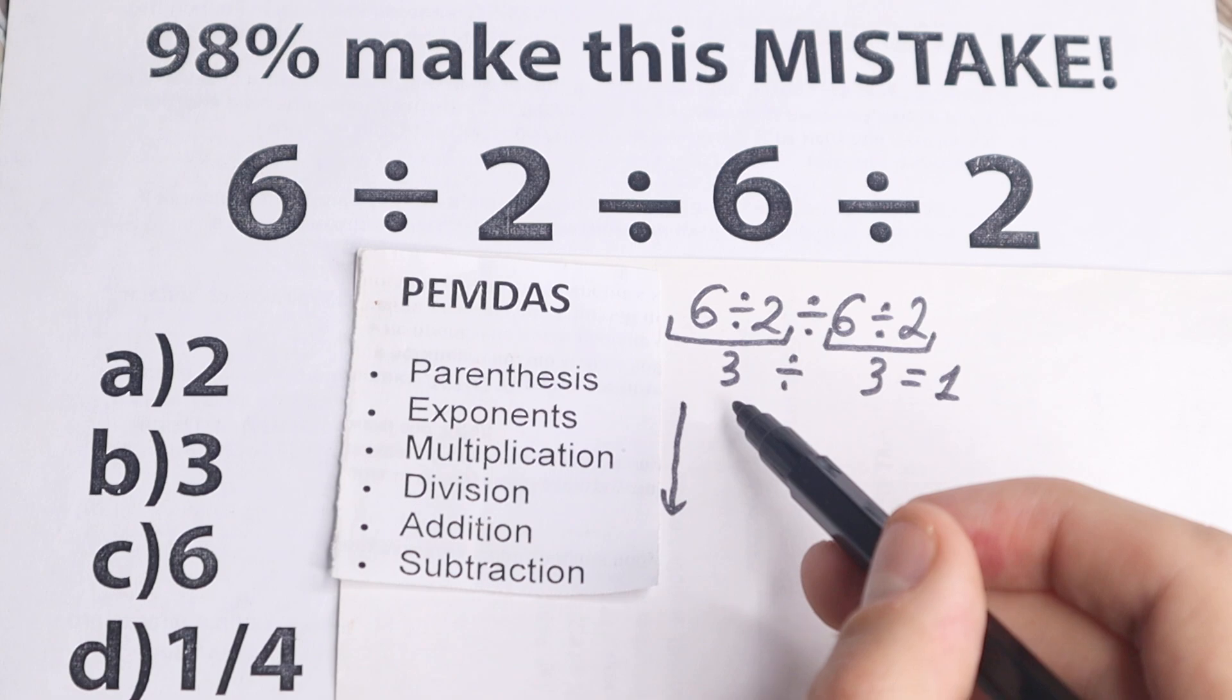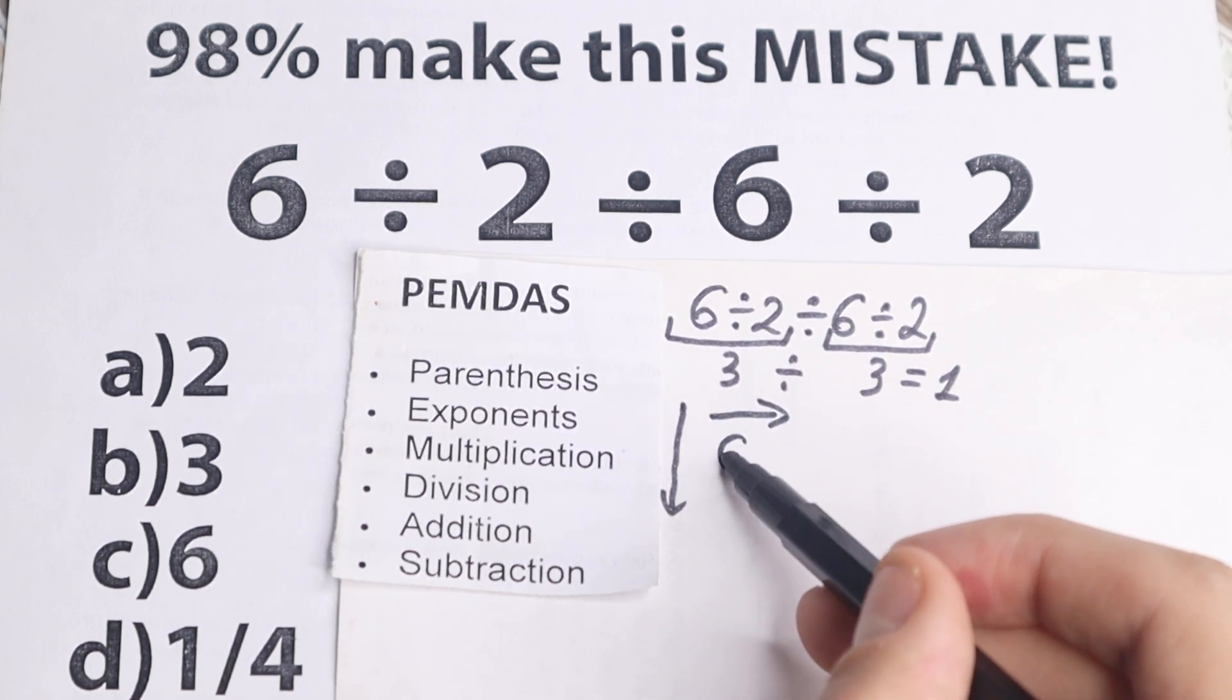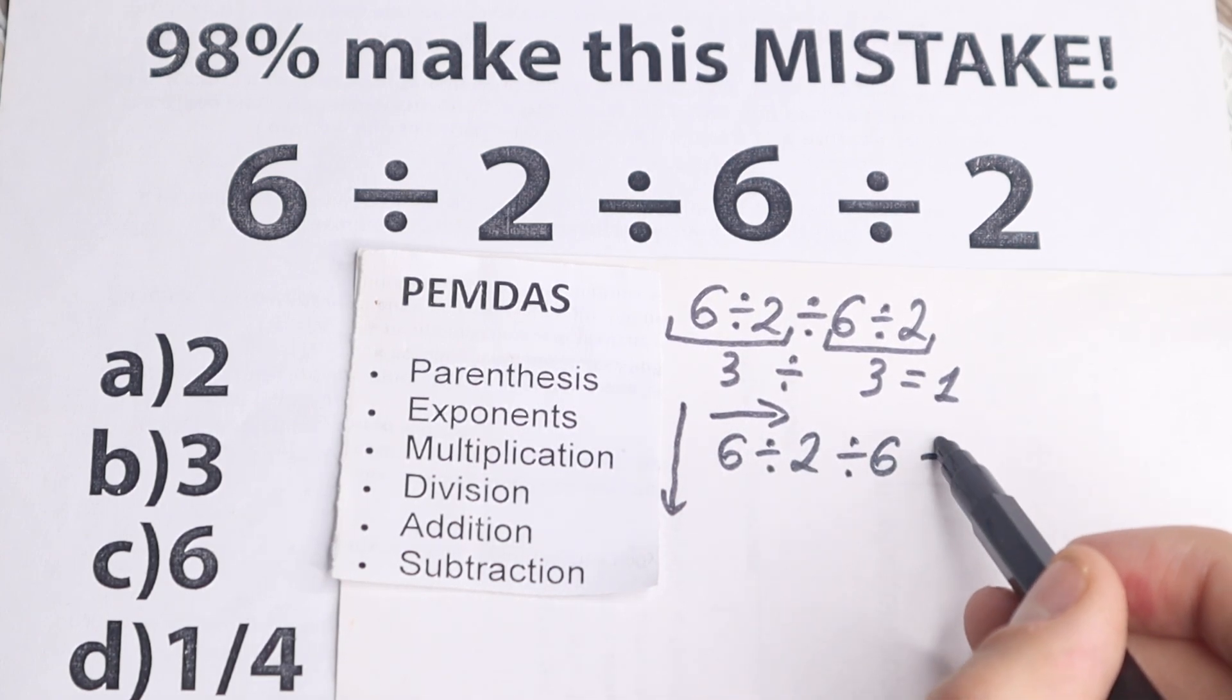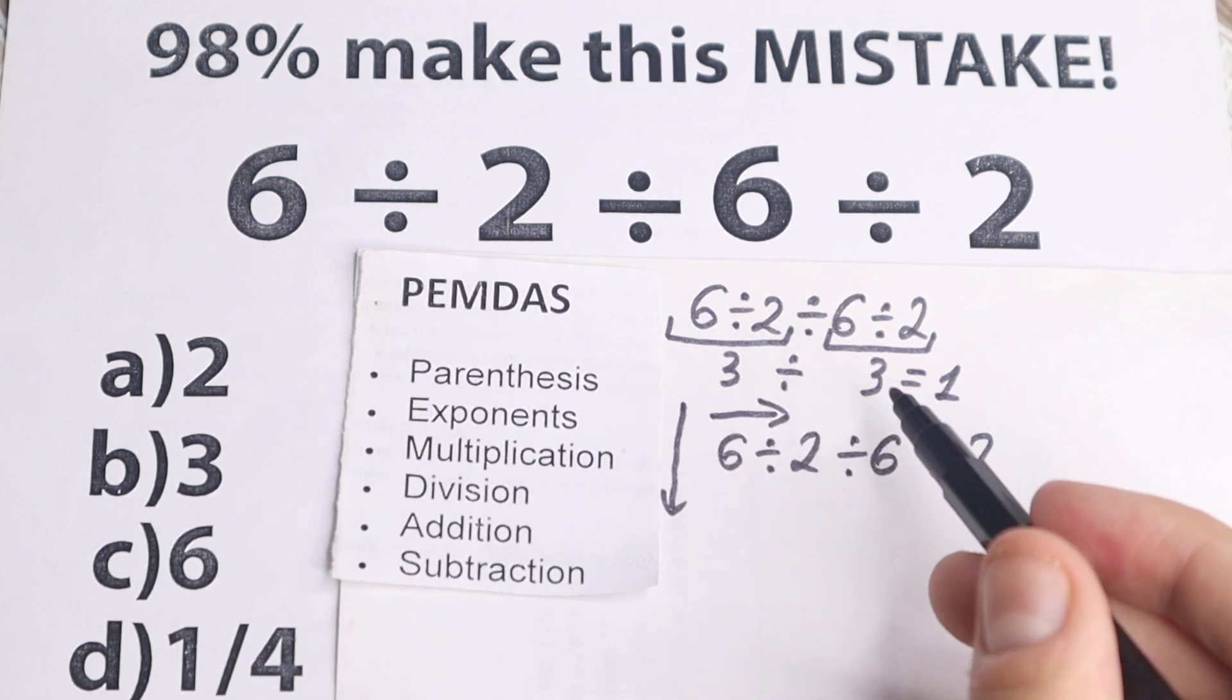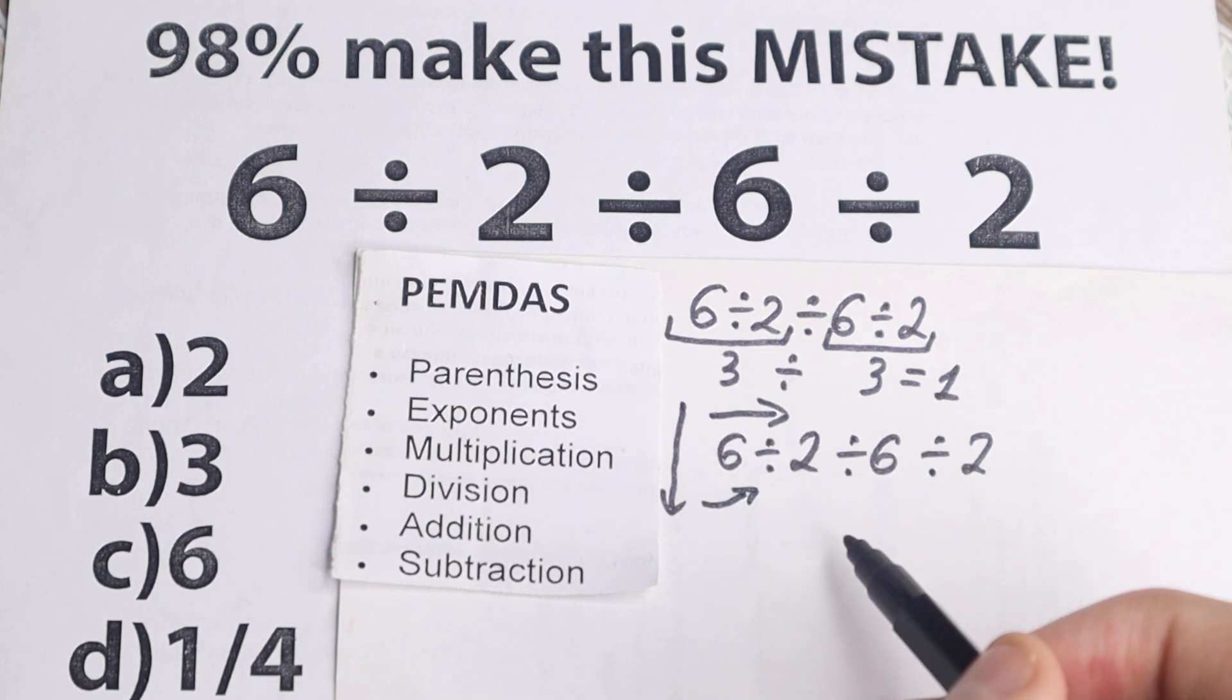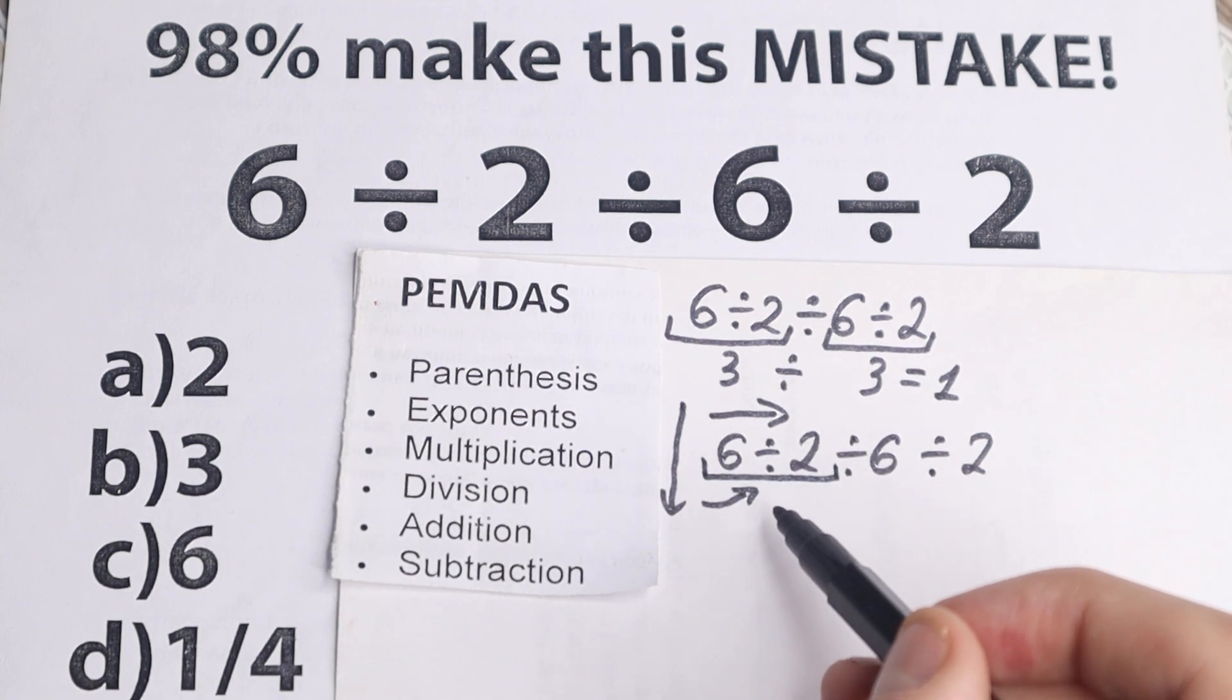If you're talking about PEMDAS, this PEMDAS works from the left to the right. So we have 6 divided by 2, divided by 6, and divided by 2. So if you're talking PEMDAS, it works from the left to the right. And now we need to scan what is the first sign from left to right. The first sign from left to right is this division. So this is our first sign. So we need to divide these two numbers.